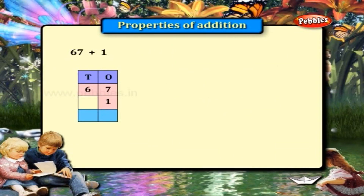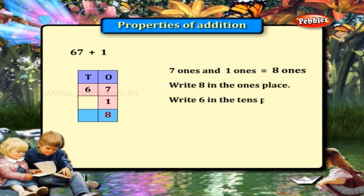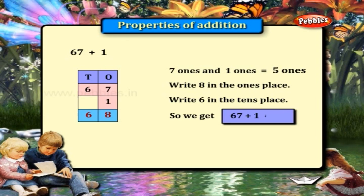67 plus 1. 7 and 1 are in the ones place. 7 plus 1 is equal to 8. Write 8 in the ones place. Write 6 in the tens place. And we get 67 plus 1 is equal to 68 as the answer.